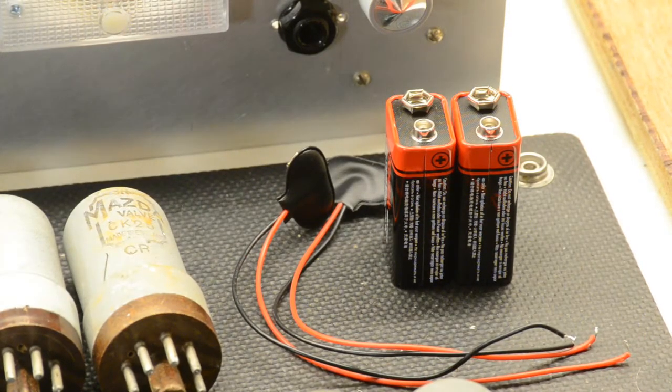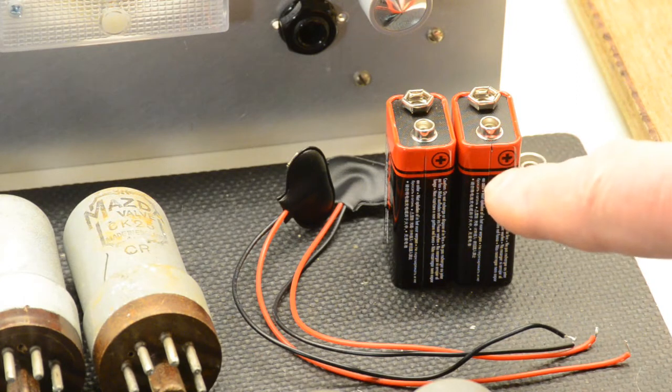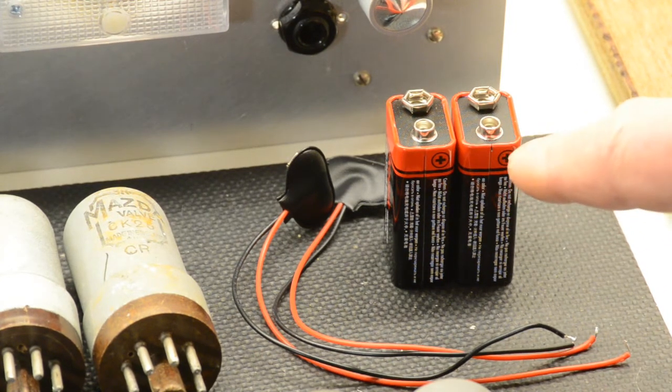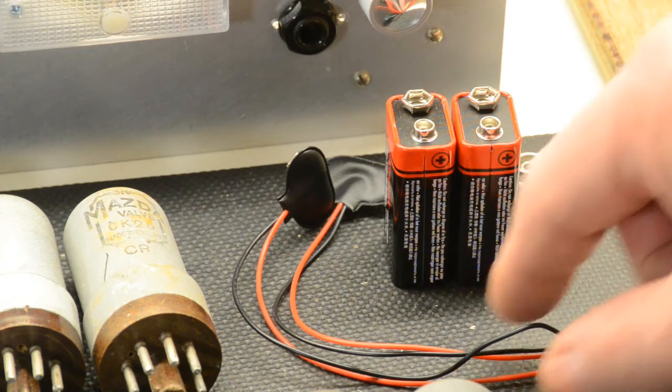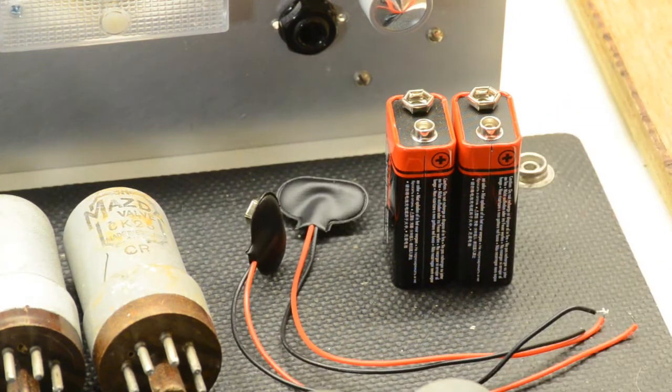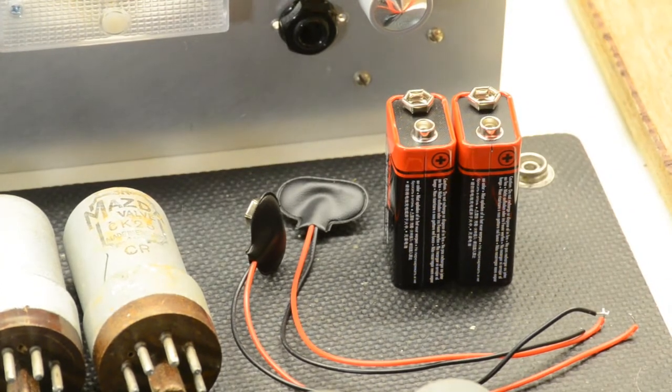Those with an eye to detail may have spotted these two little fellas. The PP3s are to give us a negative bias to make the Thyratron oscillator work. Two clips simply are for going on the batteries and connecting up in the circuit.